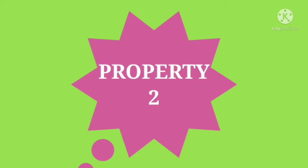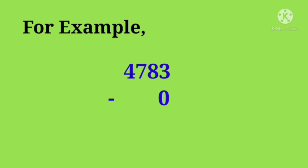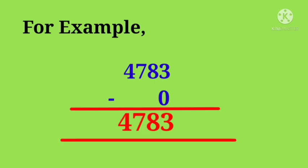Property 2: When 0 is subtracted from a number, the difference is the number itself. For example, 4783 minus 0 gives 4783 as the final answer.